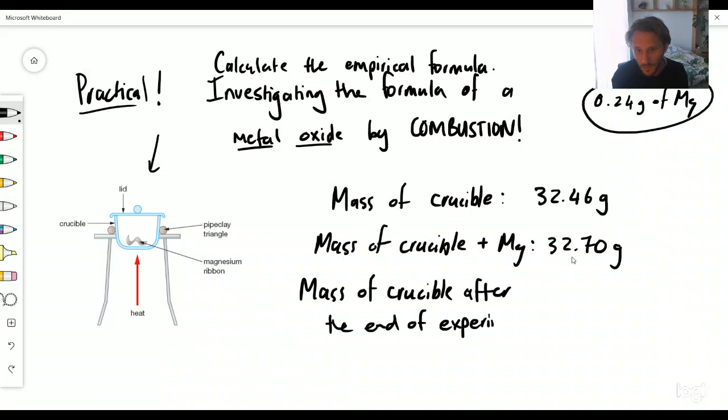So you then get the mass of the crucible after the end of the experiment. Now remember, if you can think about what magnesium oxide is - what's happened is oxygen's got itself into this reaction, it's combined with the metal magnesium. So if you think about this, what would the mass of the crucible be after the experiment - do you think it'll be higher or lower than this number? You'd be correct if you said higher, because oxygen is an element, it exists as something. So if it's now combining on top of the magnesium, that means it's going to have a greater mass.